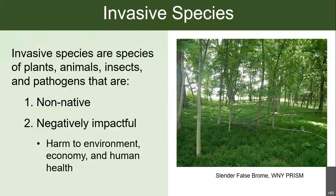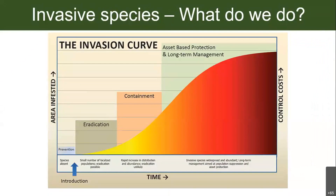Invasives are a huge problem, but the main theory for managing them depends on where a species is on the invasion curve. When a species hasn't arrived yet, focus on prevention. When it's present in small numbers, focus on eradication. Eventually eradication is no longer feasible, and the priority becomes containment — not letting the species spread into uninfested areas. The key takeaway is that the earlier we are on the curve, the better, because prevention and eradication of small populations is much cheaper than long-term management.